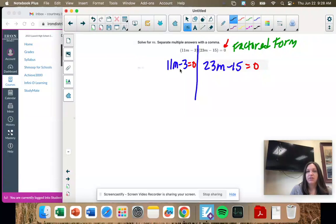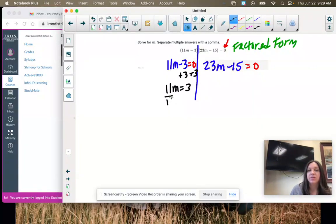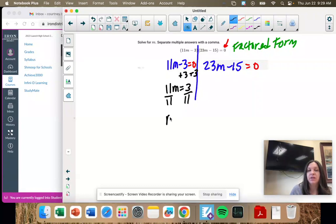And now we're going to solve each equation. So I want m by itself. That's the goal. So I'm going to add 3 to both sides. Divide both sides by 11. So m equals 3 over 11.